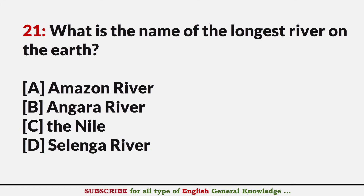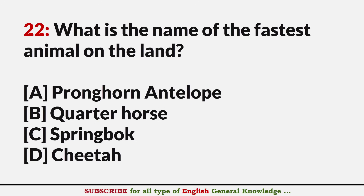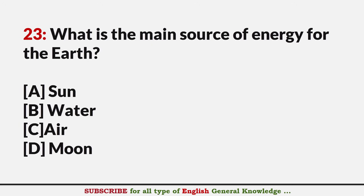What is the name of the longest river on earth? Answer C: The Nile. What is the name of the fastest animal on land? Answer D: Cheetah. What is the main source of energy for the earth? Answer A: Sun.